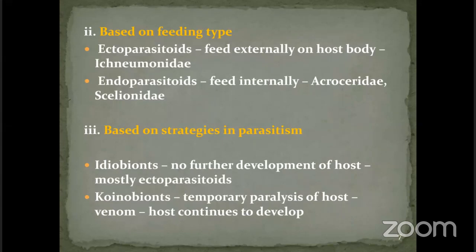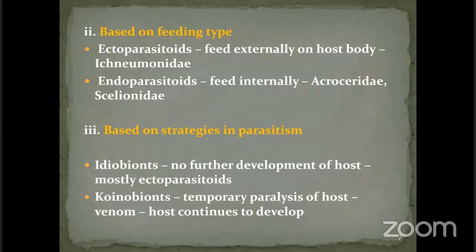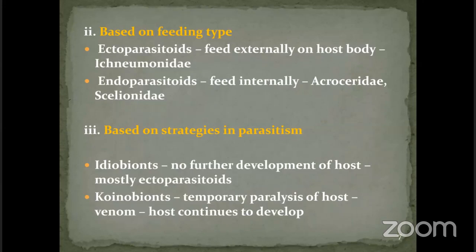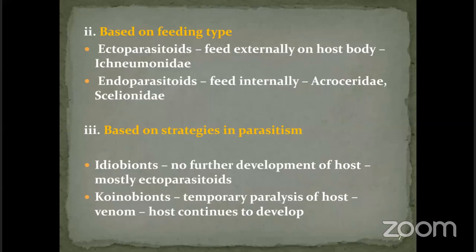Based on strategies, parasitism is classified as idiobiont and koinobiont. In idiobiont parasitoids, the parasitoid injects venom which prevents the host from further development, and completes its life cycle within the egg itself. In case of a koinobiont, there is temporary paralysis of the host — the embryo spider developing within the egg can turn into a juvenile, from which the parasitoid can emerge. The host continues to develop — from egg to juvenile, and from juvenile to adult — and the parasitoid can emerge from whichever stage.